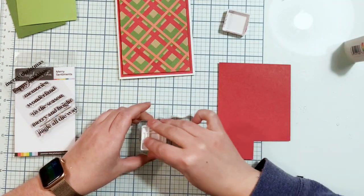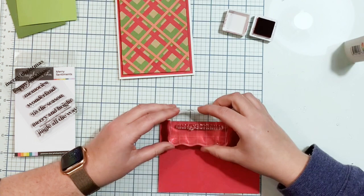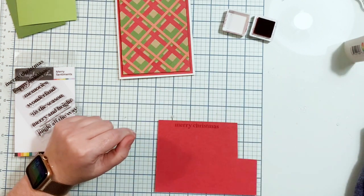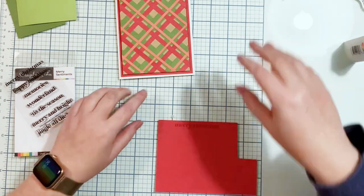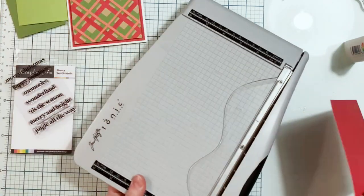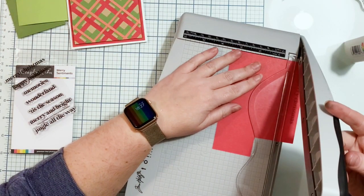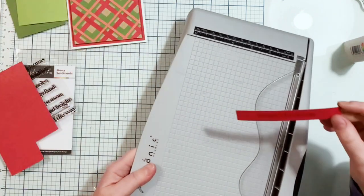If you are going to mail the card and you want to save on the dimension, you can make it all flat. I used a Merry Sentiments stamp set from scrapbook.com to stamp Merry Christmas on the red cardstock.